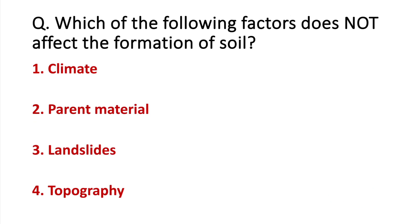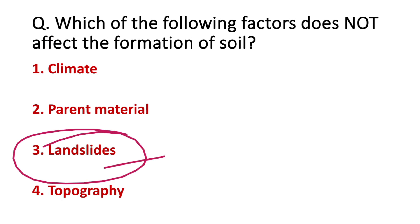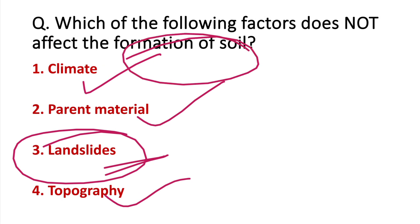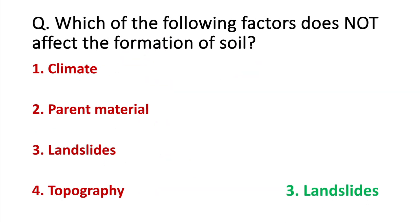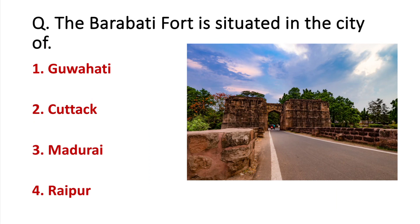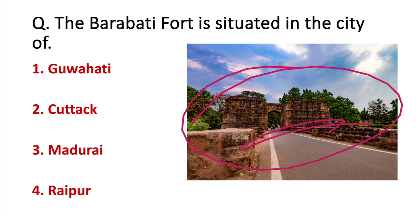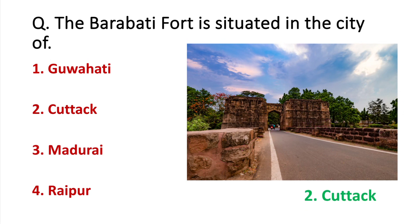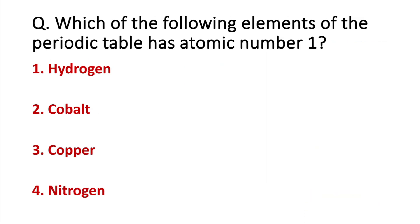Which of the following factors does not affect the formation of soil? Among the options, landslide does not affect the formation of soil. Also, the element with atomic number one in the periodic table — we all know that is hydrogen.